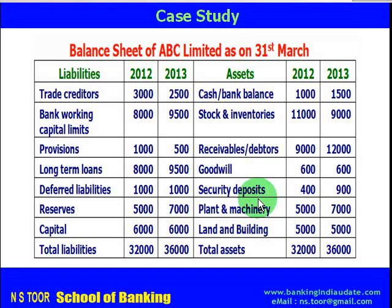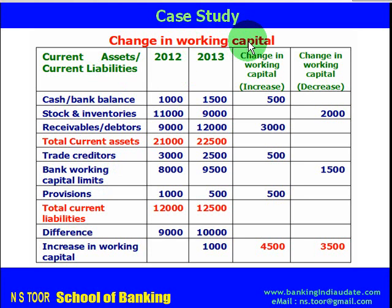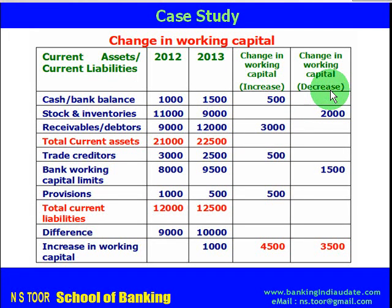In working capital, we take into consideration the current liabilities and current assets. This information relating to current assets and current liabilities is picked from the balance sheet. Cash and bank balances increased from 1,000 to 1,500, so the change in working capital is an increase of 500 — recorded under increase in working capital. Stocks declined from 11,000 to 9,000, so it is a decrease in working capital.